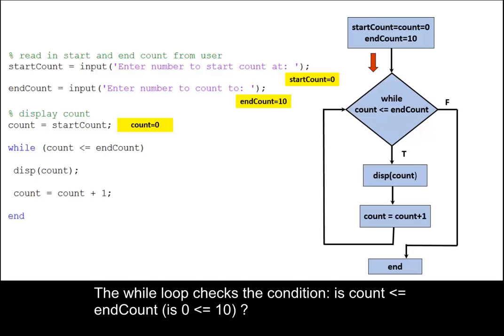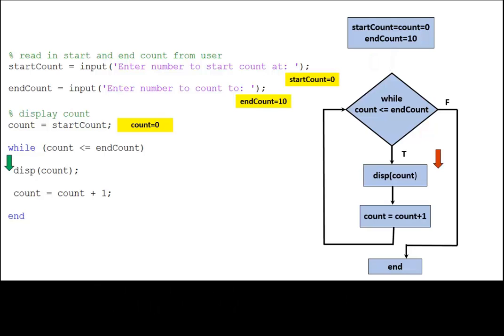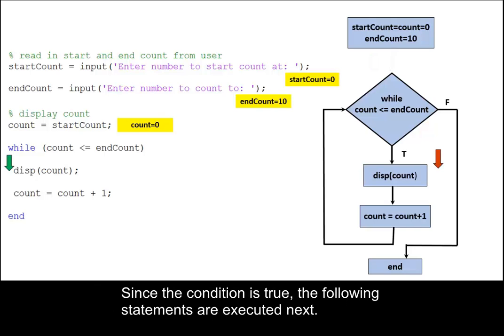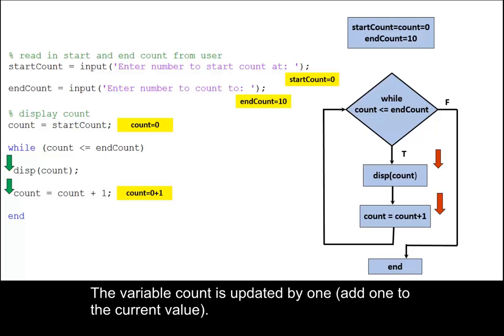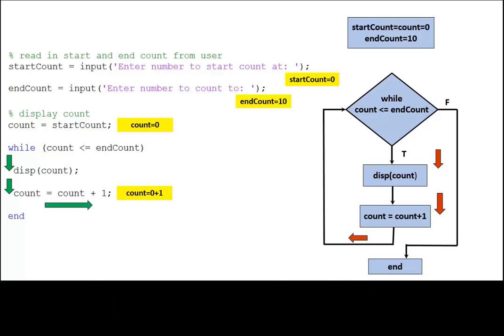The while loop checks the condition: is count less than or equal to endCount? Since the condition is true, the following statements are executed next. The variable count is displayed in the command window. The variable count is updated by one. The loop returns to the beginning.